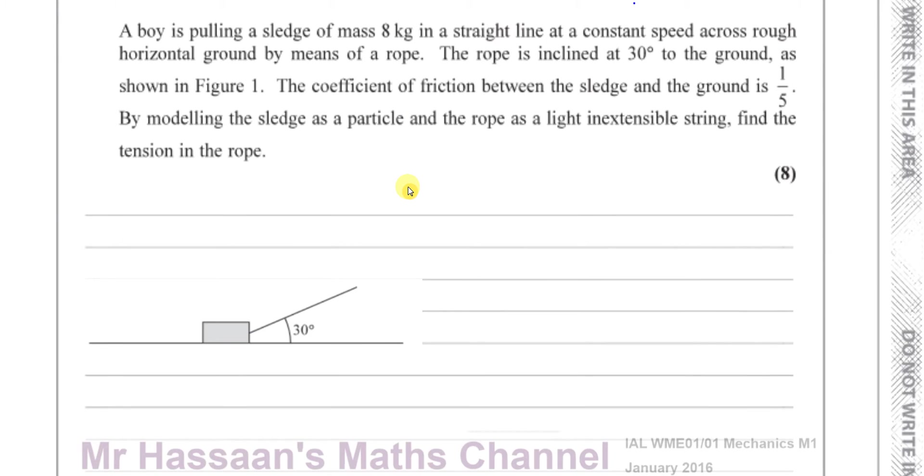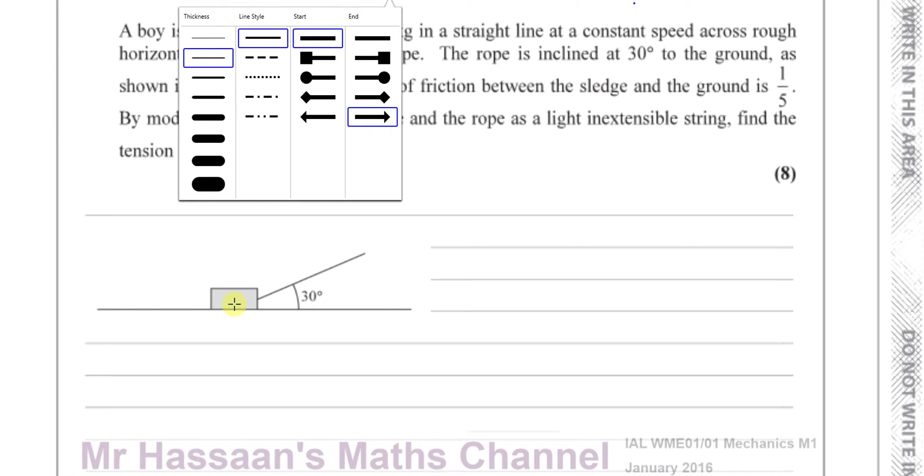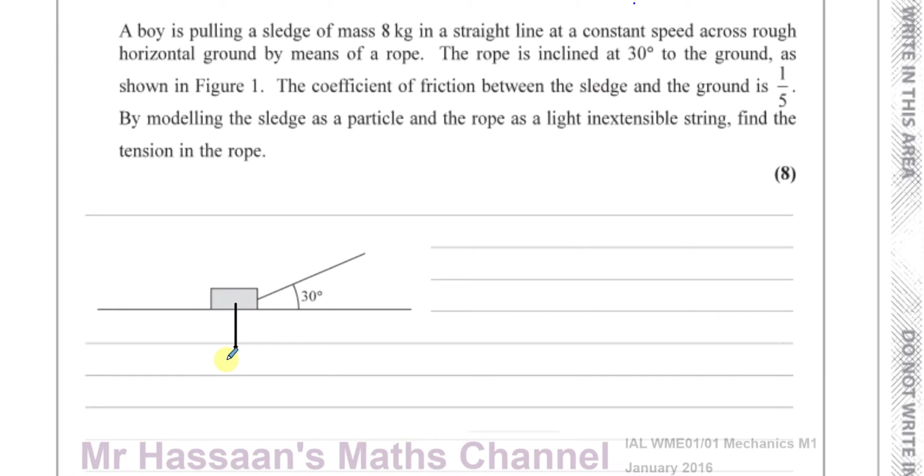So I've got this little diagram prepared, just a copy of it so we can see what's going on. First of all, the mass of the sledge is 8 kilograms, so we can put a force here which is the weight. If the mass is 8 kilograms, remember the weight is equal to mg, so this is 8g newtons acting downward. You also have the reaction force R because the sledge is in contact with the ground, acting perpendicular to the surface. Then you have a tension T in the rope pulling the sledge at an angle of 30 degrees. You also have friction acting because it's rough horizontal ground. Because it's moving at constant speed, the friction has reached its maximum value, so I'll write that as F_max. We also know that the coefficient of friction is equal to one-fifth between the ground and the sledge.